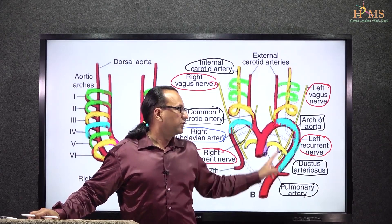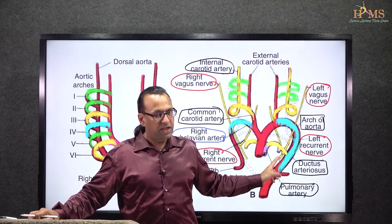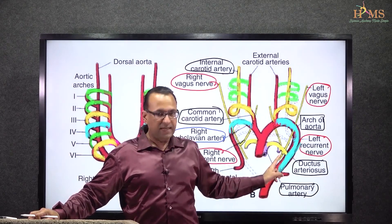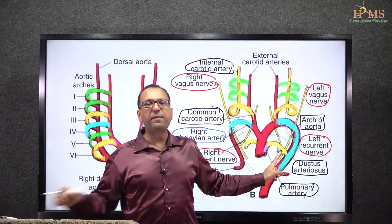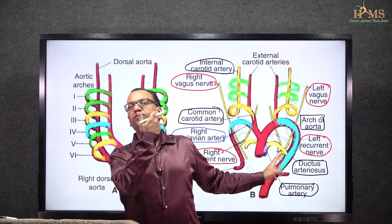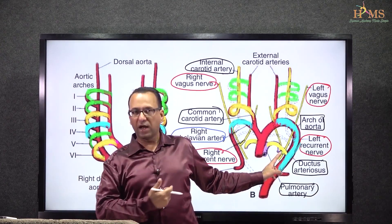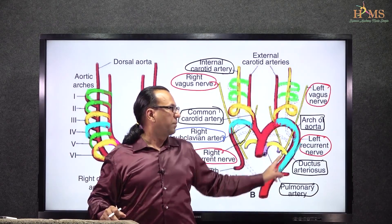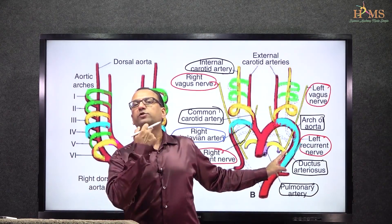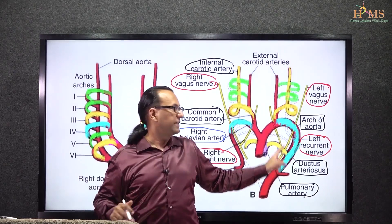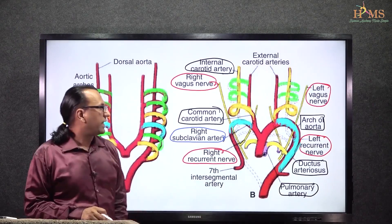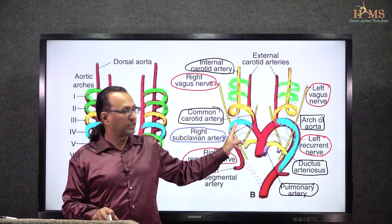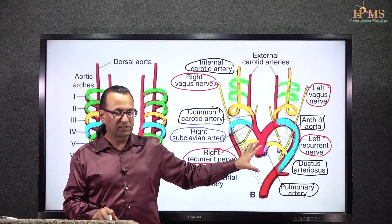The left-sided recurrent laryngeal nerve hooks under the ligamentum arteriosum and then goes towards the larynx. So it still remains in the thorax — from the neck, it will enter the thorax and go back into the neck region. It will be passing the superior thoracic aperture two times: once going into the thorax, and a second time coming back into the neck region. Whereas the right recurrent laryngeal nerve will stay only in the neck region.